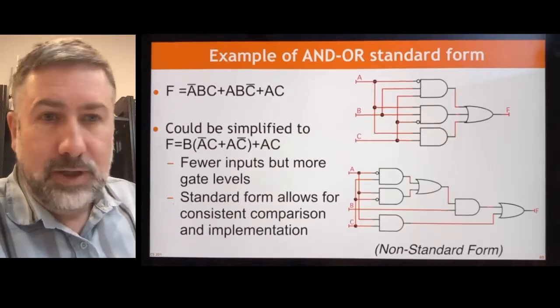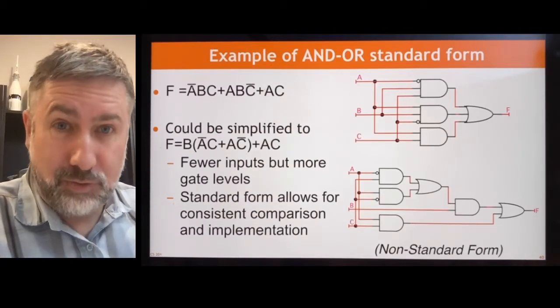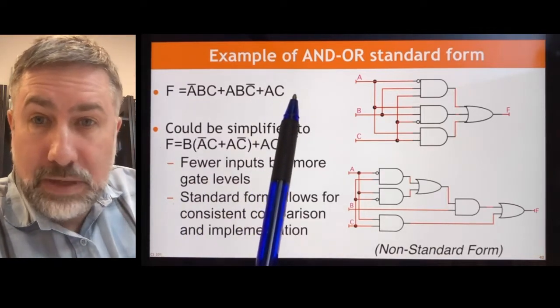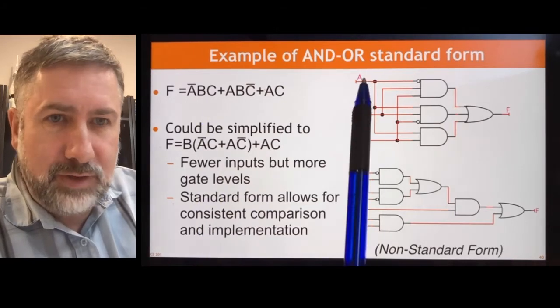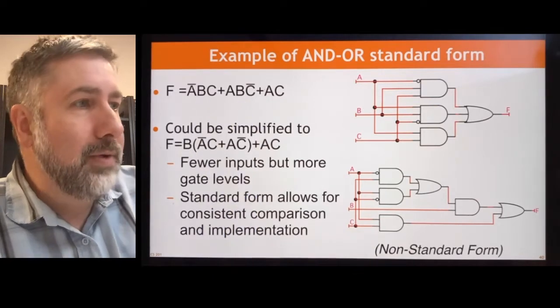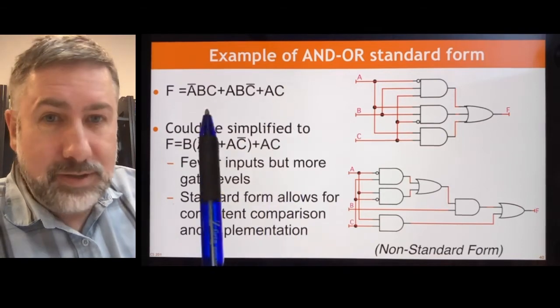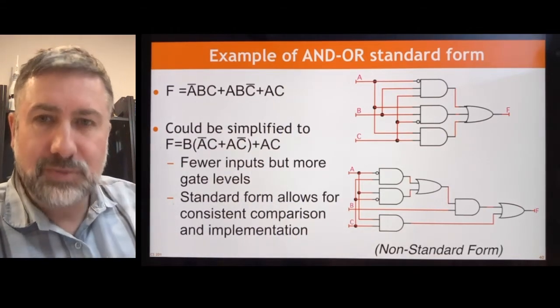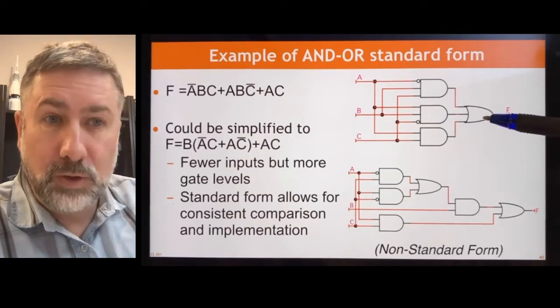Here's an example of an AND-OR standard form. This is not a canonical form, because there's no B in this term. This is a minterm for this function because there's three variables A, B, and C. A prime, B, C, and A, B, C prime are both minterms. But because this isn't a minterm, this isn't a canonical form, but it is a standard form. It's a bunch of AND terms and then a big OR term at the end.